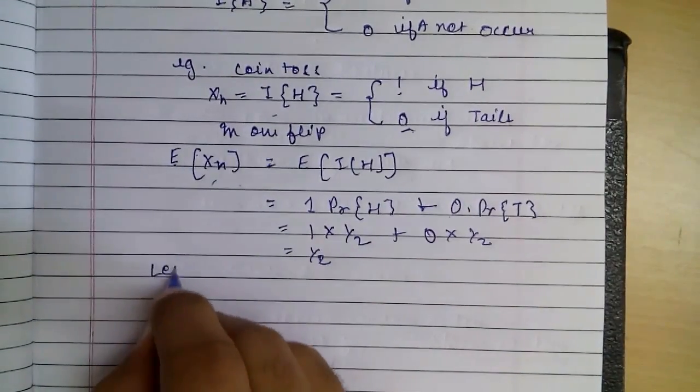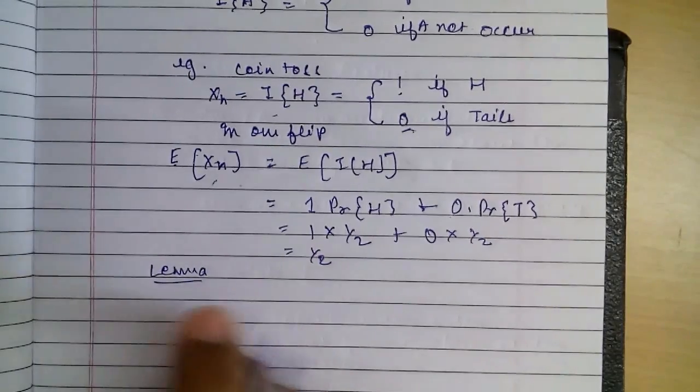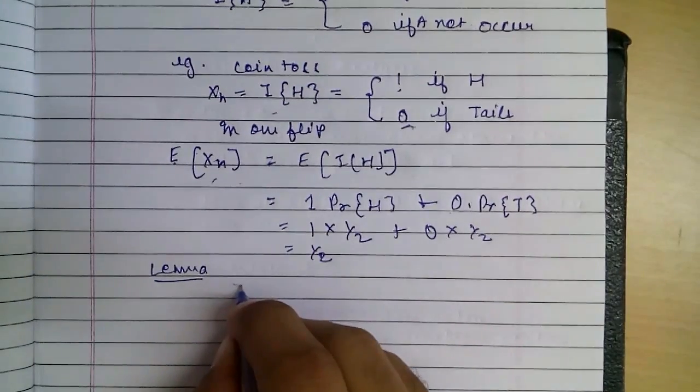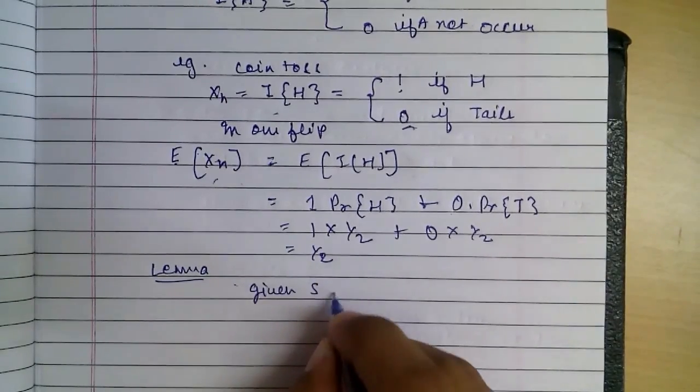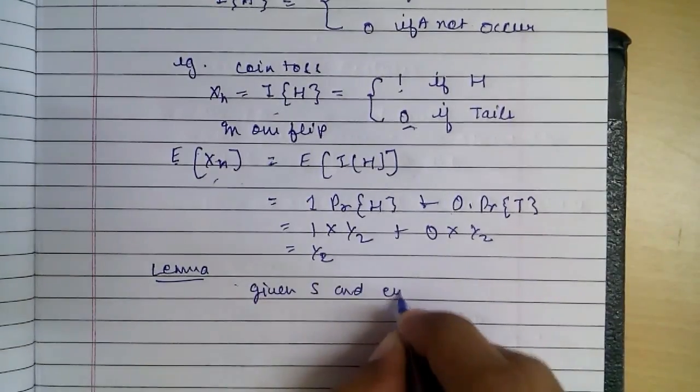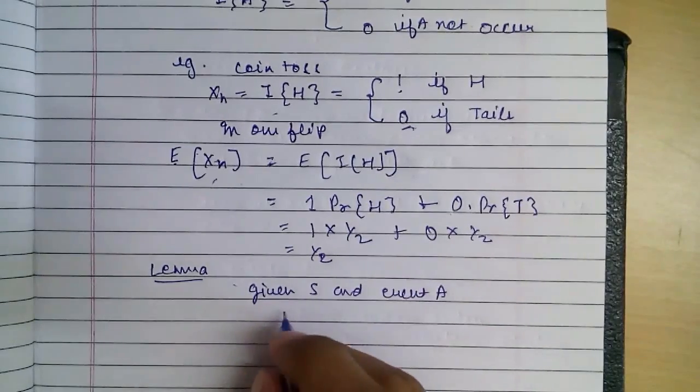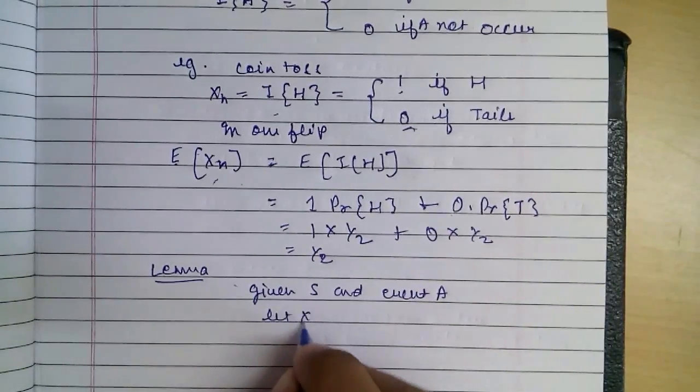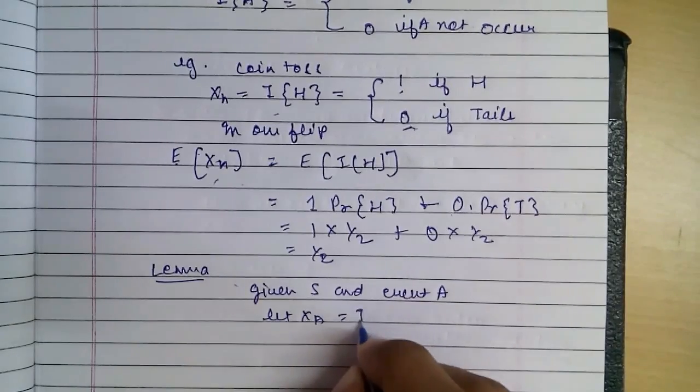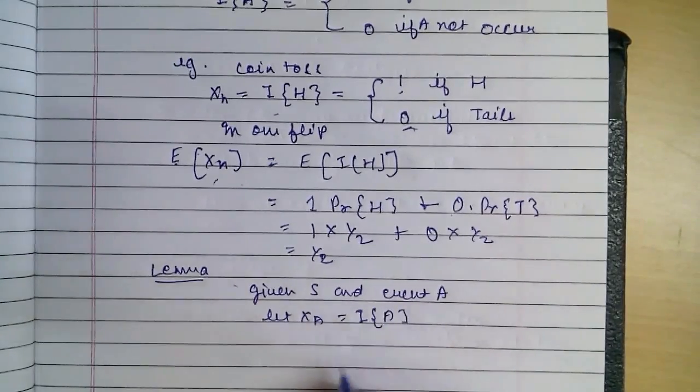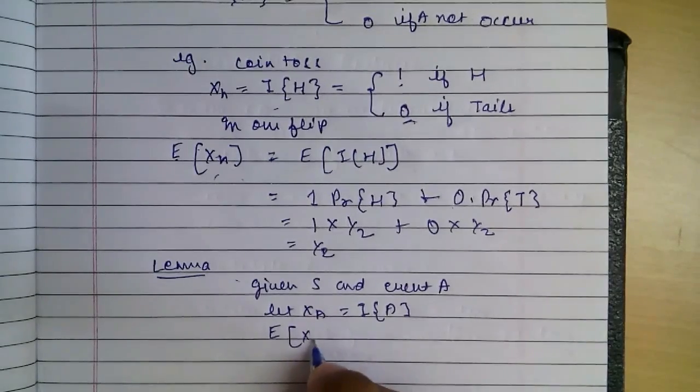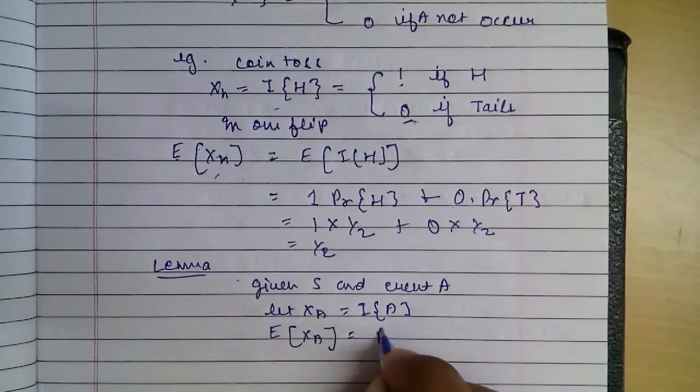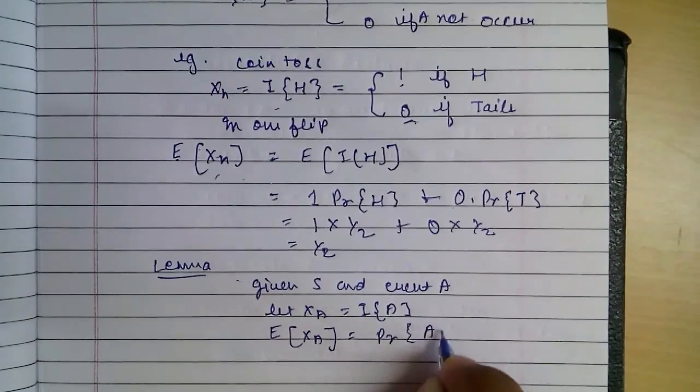We get a simple lemma here. When we are given set S and event A, let X of A equal to I of A. We can say that the expectancy of X equals to the Probability of A.